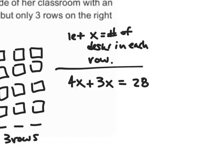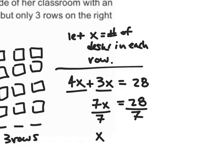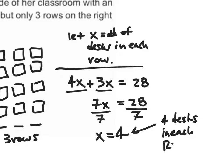I had to draw a picture to see how this all worked. Now let's combine our like terms: 4x plus 3x — both terms contain an x, so they're like terms. I add the numbers out front: 4 plus 3 gives me 7. Keep the x and let that equal 28. Dividing both sides by 7 gives me x is equal to 4. So there would be 4 desks in each row.